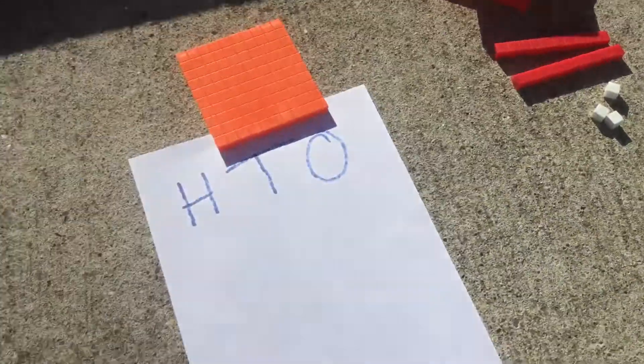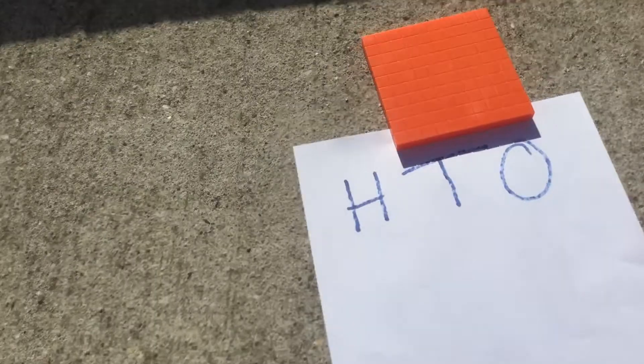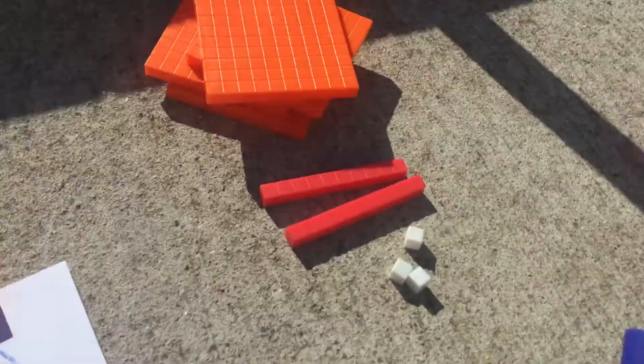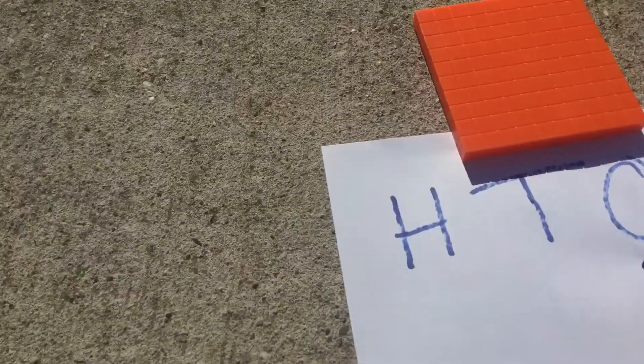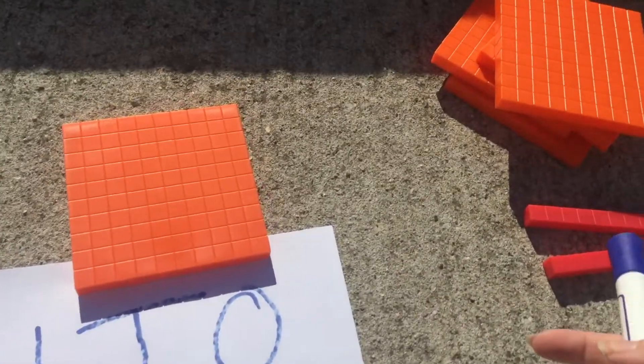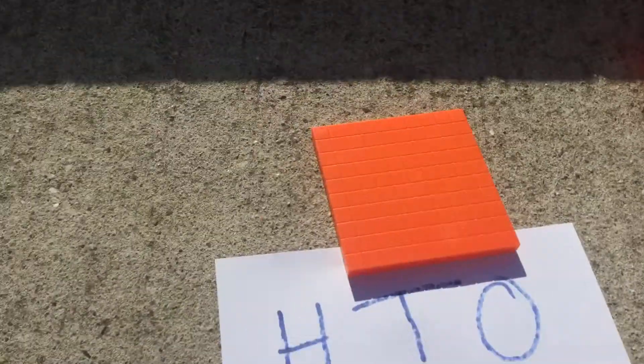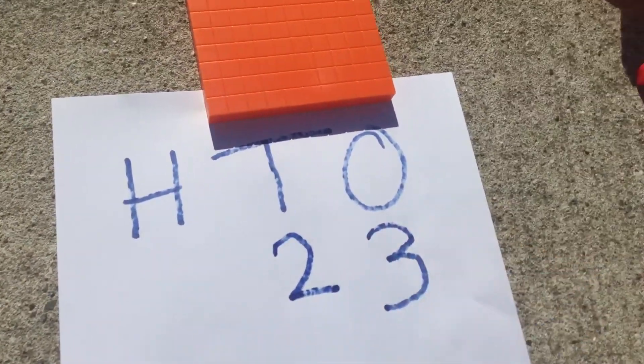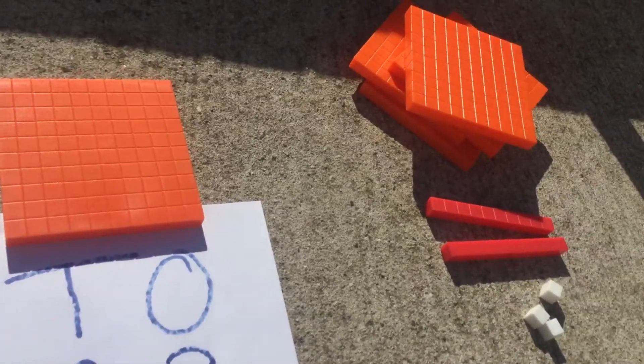I need to put that into my HTO columns. I know that there are 3 ones, 2 tens and 4 hundreds.